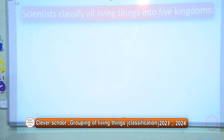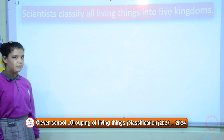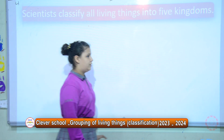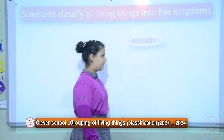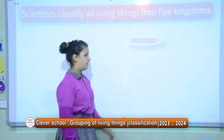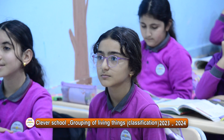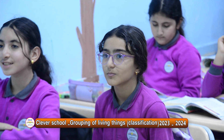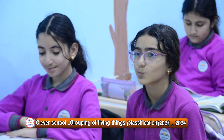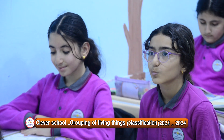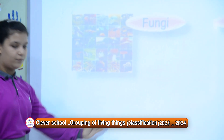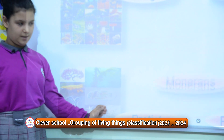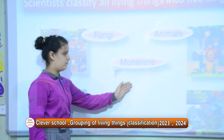In the past, scientists classified all living things into larger groups, which is called a kingdom. The kingdom has five groups: number one, animal; number two, plant; number three, fungi; number four, protists; number five, monerans.